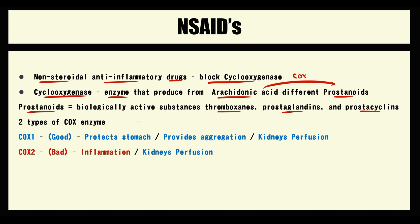We have two types of COX enzyme. COX-1 enzyme protects the stomach, provides aggregation of thrombocytes, and provides kidney perfusion. COX-2 enzyme participates in inflammation, but also provides kidney perfusion.